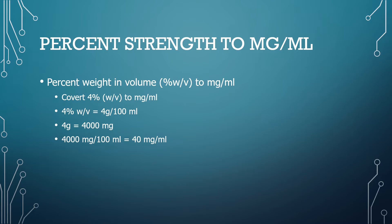If you know that four percent weight in volume equals four grams over one hundred mL — again, if that sounds confusing to you, check my video on percent weight in volume — four grams over one hundred mL. Now you need to convert that to milligram per mL. The bottom number is already in mL, which is good. The top number is in grams; we need to convert that to milligrams.